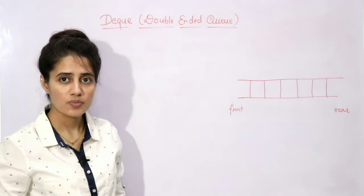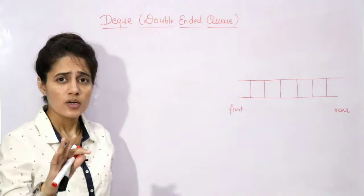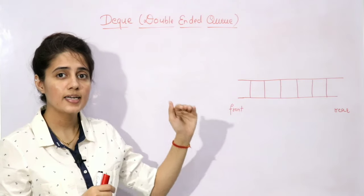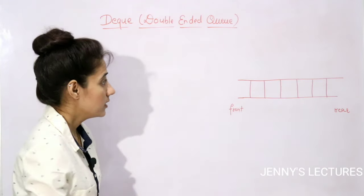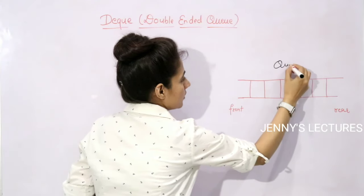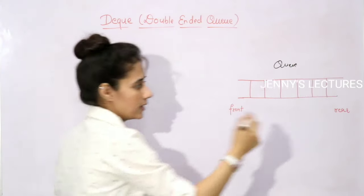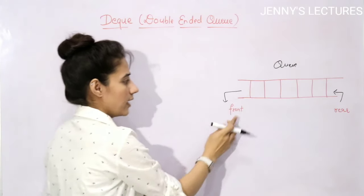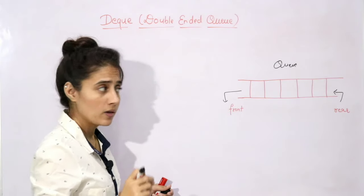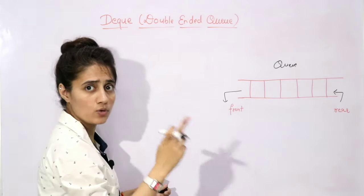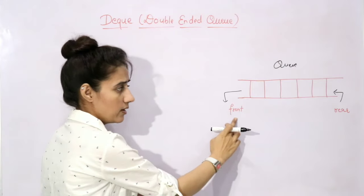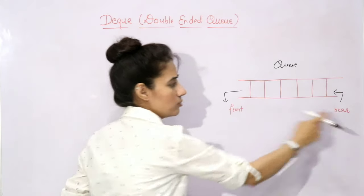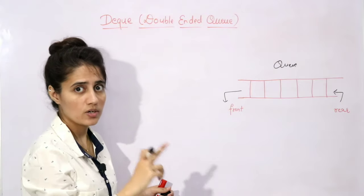Sometimes it is also known as DEC. Now, I guess you remember what is a queue — it is a list where insertion would be from one end and deletion would be from another end. Insertion would be from the rear end of the queue and deletion would be from the front of the queue. That is the restriction in the queue.